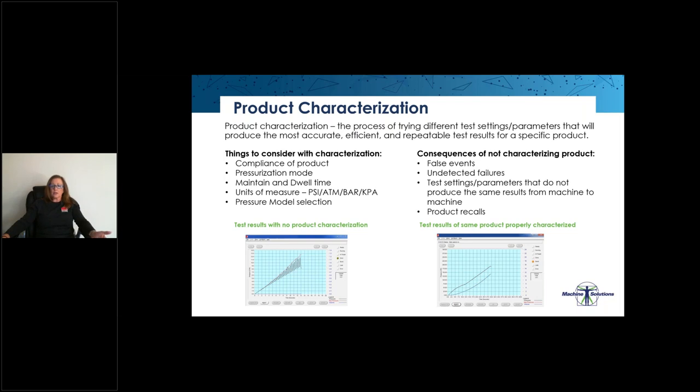What are the consequences of not characterizing our product? These things include false events, undetected failures, test settings or parameters that do not produce the same results from one machine to another because they are not optimized. And when we don't get repeatable and reliable results, the quality of our products can be called into question and could lead to product recalls.